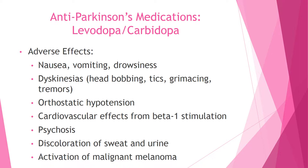Cardiovascular effects from beta-1 stimulation — remember beta-1 receptors are only in the heart — can include tachycardia, palpitations, and dysrhythmias. Monitor vital signs, get a baseline EKG, notify the provider if manifestations occur, and use cautiously in patients with existing cardiovascular disease. Psychosis may occur, including visual hallucinations, nightmares, and paranoid ideations. Second-generation antipsychotics such as clozapine can be used to decrease these effects without worsening Parkinson's manifestations.